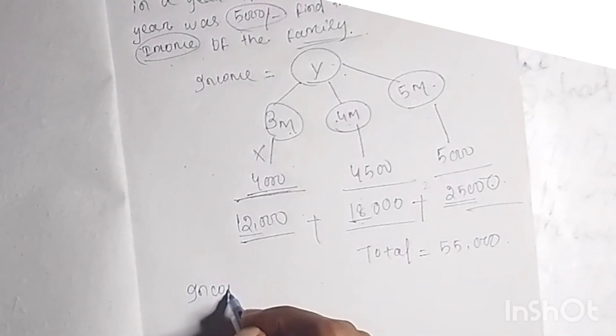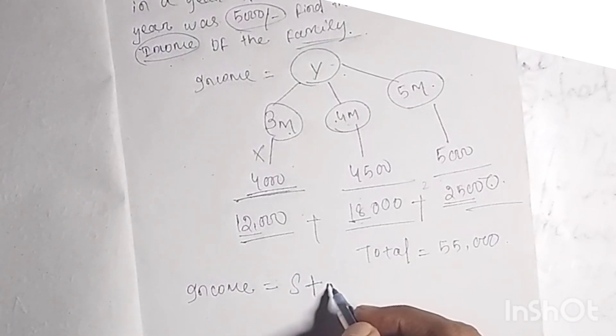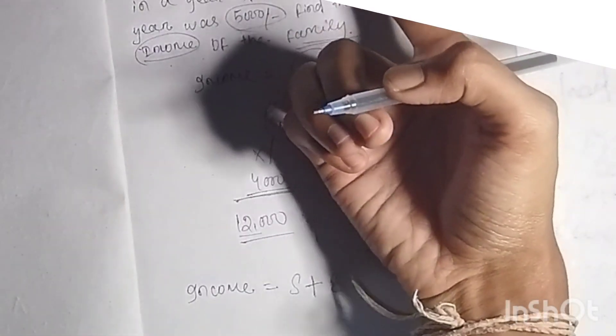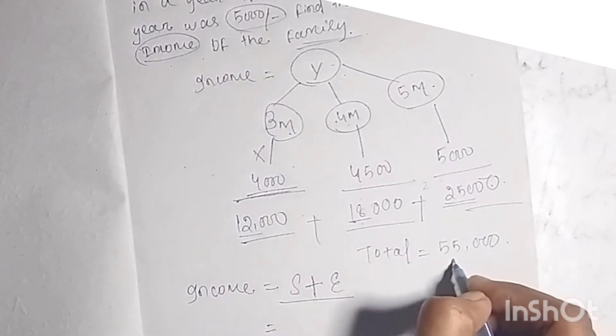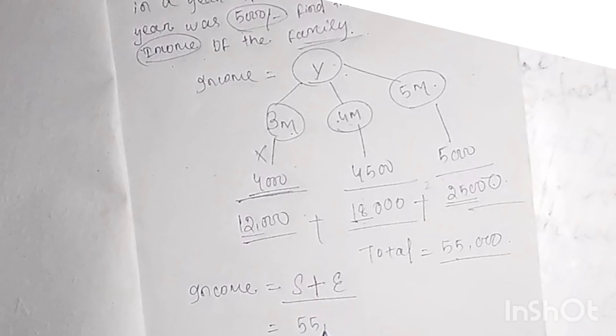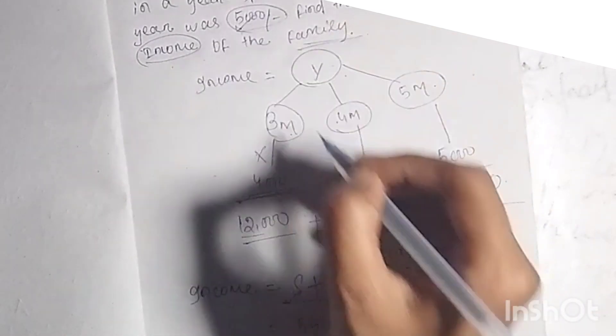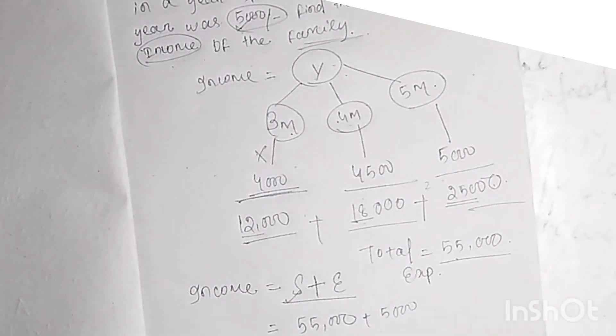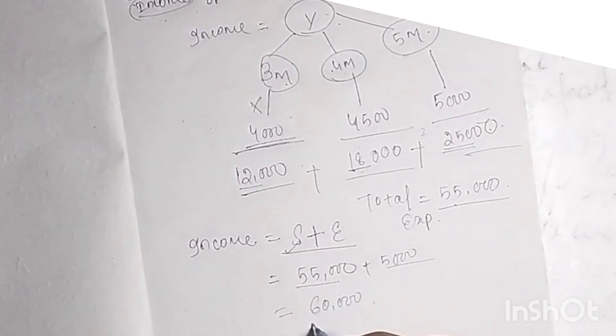Income equals saving plus expenditure. Our total expenditure is 55,000 and savings is 5,000. So income = 55,000 + 5,000 = 60,000. So 60,000 is our total income.